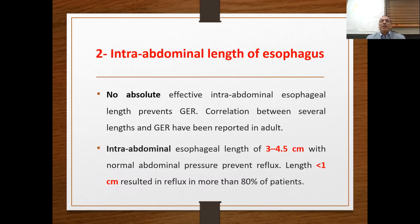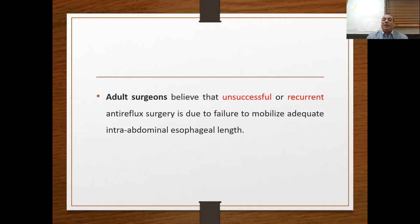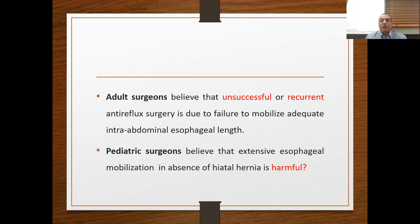The second important barrier is the intra-abdominal length of the esophagus. No absolute effective intra-abdominal esophageal length definitively prevents GERD, though correlations between length and GERD have been reported in adult studies. In adults, an intra-abdominal esophageal length of 3 to 4.5 cm with normal abdominal pressure prevents reflux. If it falls below 1 cm, reflux occurs in more than 80% of patients. Adult surgeons believe failed anti-reflux surgery is due to inadequate intra-abdominal esophageal length mobilization, while pediatric surgeons believe extensive mobilization without hiatus hernia is harmful.